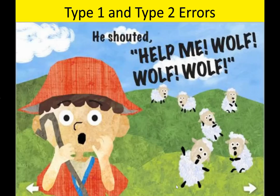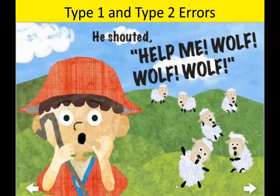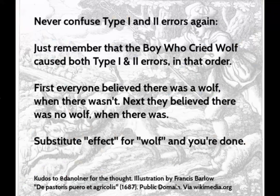A way to remember Type 1 and Type 2 errors is through the story of the boy who cried wolf. There was a boy who was a shepherd up on the hills. One day he cried for help saying there was a wolf — all the villagers ran to see him, but there wasn't a wolf. The next day he did it again, and again there was no wolf. The third day he cried wolf and the villagers didn't believe him — but there was a wolf and it ate the boy. The story teaches children not to tell lies, because if you tell lies, people won't believe you when it's important.